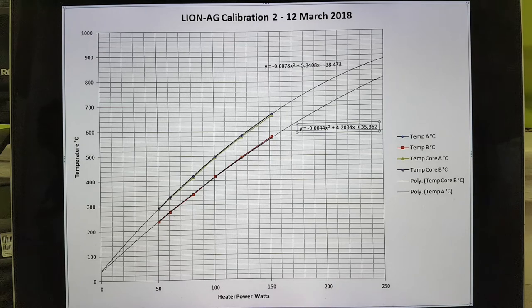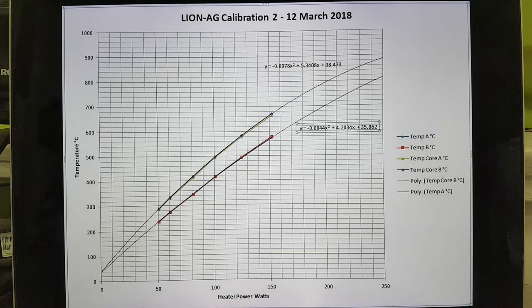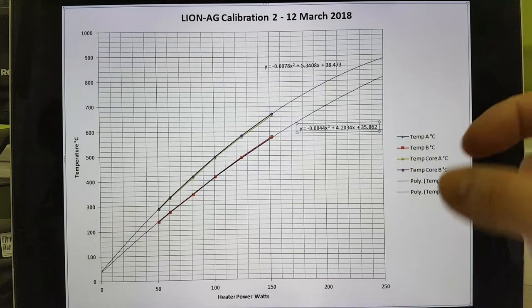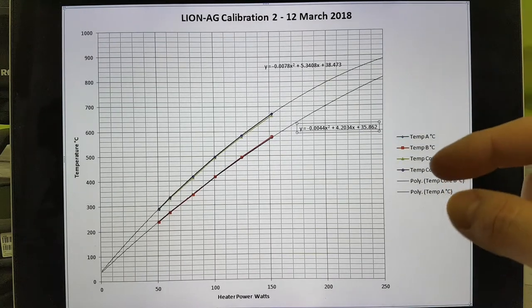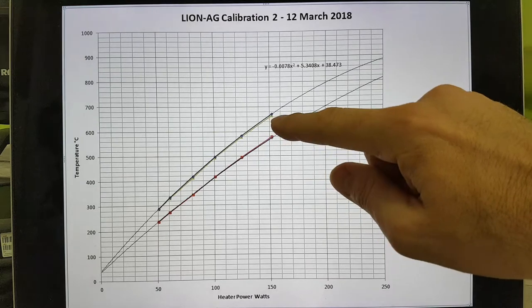So Alan's actually intending to have a sheathed thermocouple in the core with a piece of sawn-off bolt. The kind of bolt which is used in the Lion 1 and Lion 2 is a zinc-coated bolt, so that effectively they're the same, but with the sheathed thermocouple providing the core temperature.